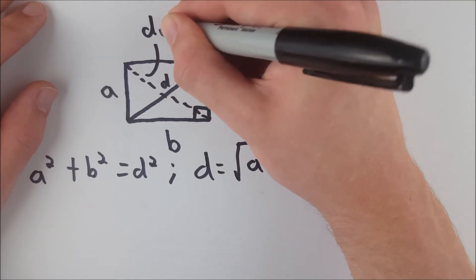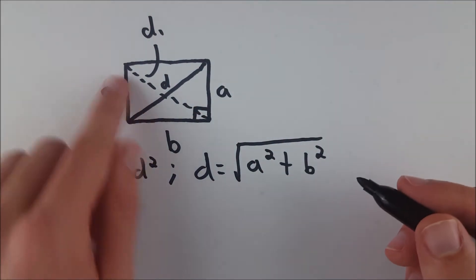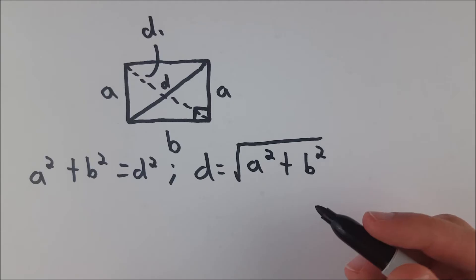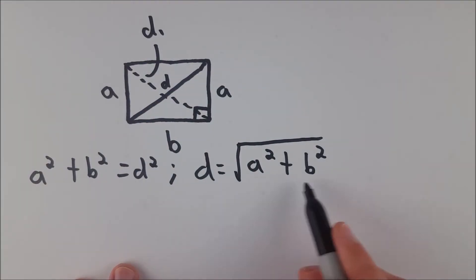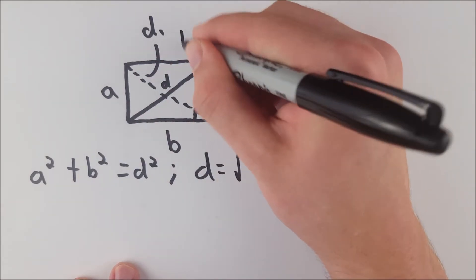I know that's a bit of a crappy diagonal, but this is d subscript 1, so this is the other diagonal, and now we're going to show what this is equal to, and it will prove to be equal to the first diagonal. The length of this side, of course, is b.